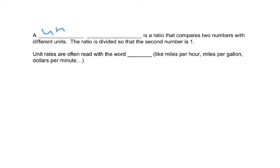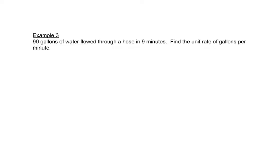A unit rate is a ratio that compares two numbers with different units. The ratio is divided so that the second number is 1. Unit rates are often read with the word per, like miles per hour, miles per gallon, dollars per minute. Those are all unit rates. And remember that per tells us to divide.